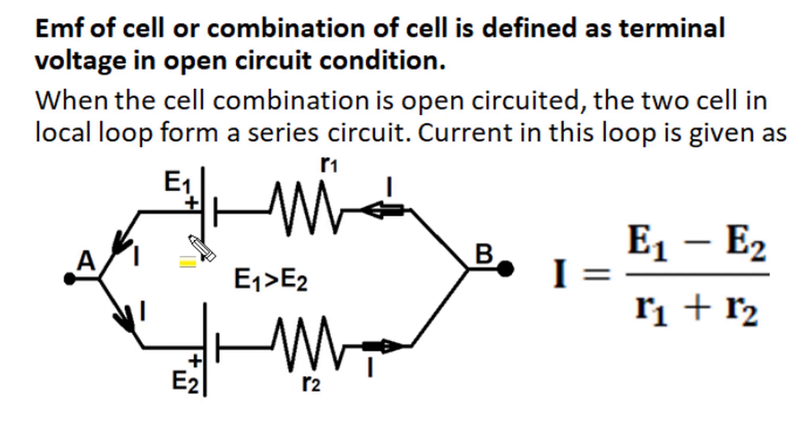We know that EMF of a cell or a combination of cells is defined as that terminal voltage which is obtained when the cell or cell combination is in open circuited condition. That means the cell combination is not supplying any current to the external circuit, and in that condition, the terminal voltage between A and B in the open circuit condition is the EMF of this cell combination.